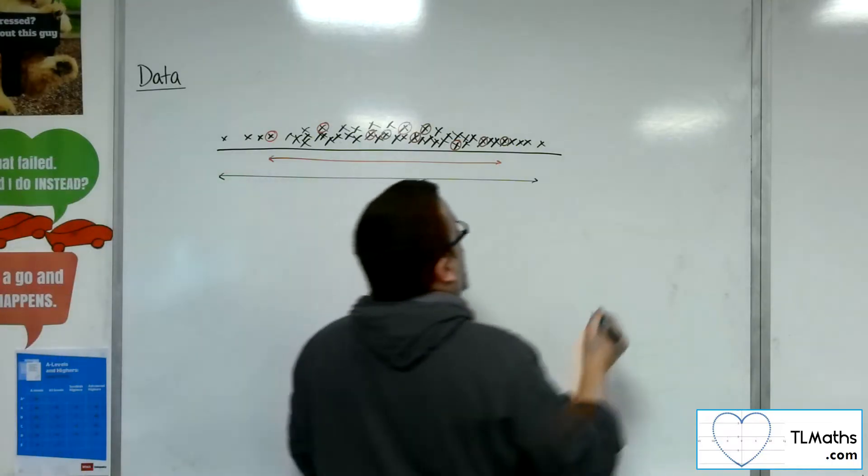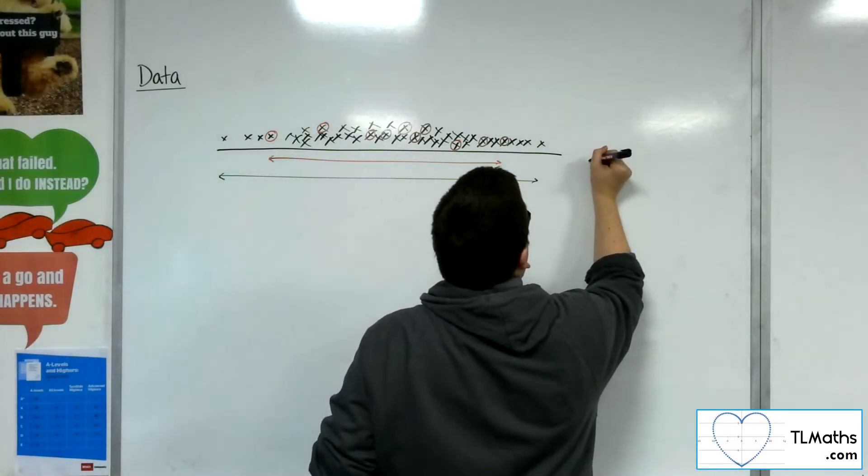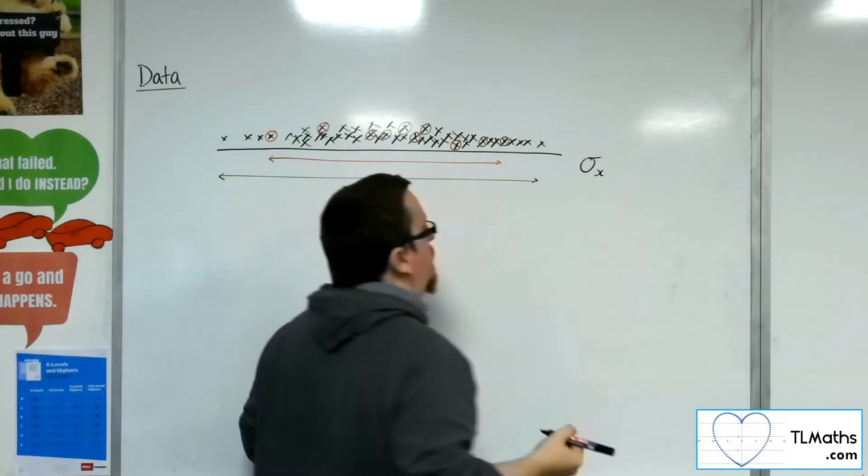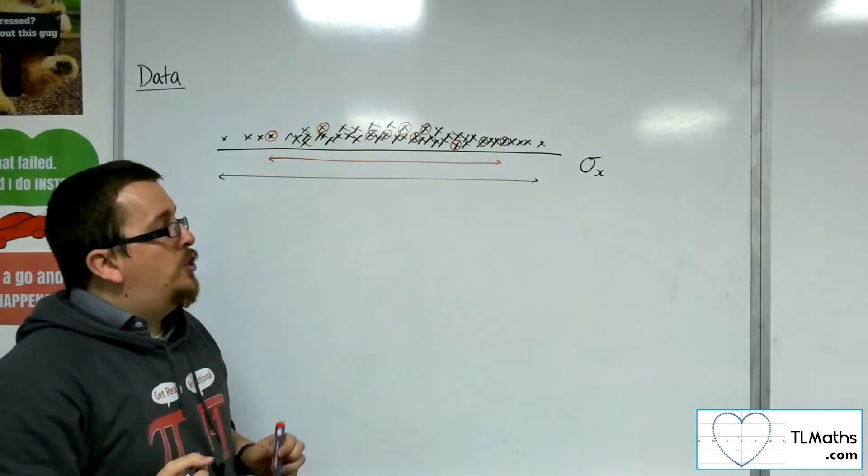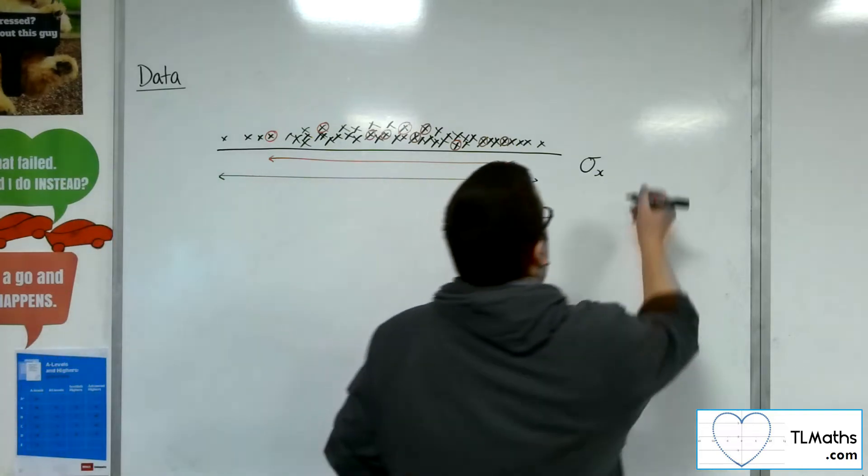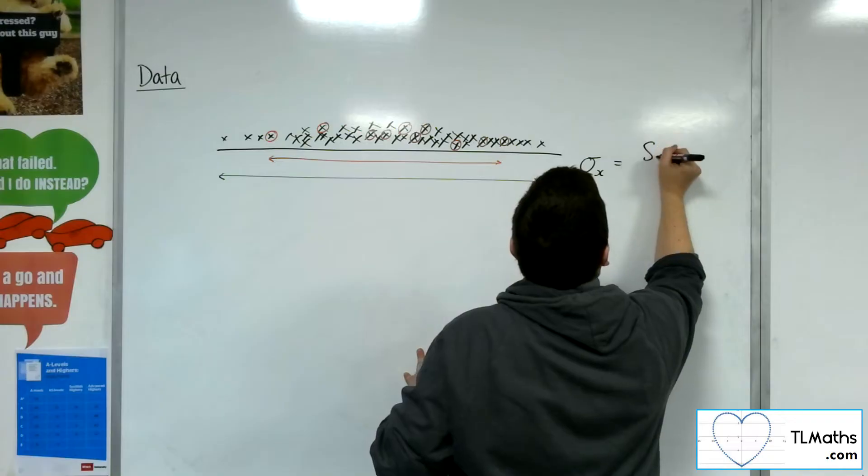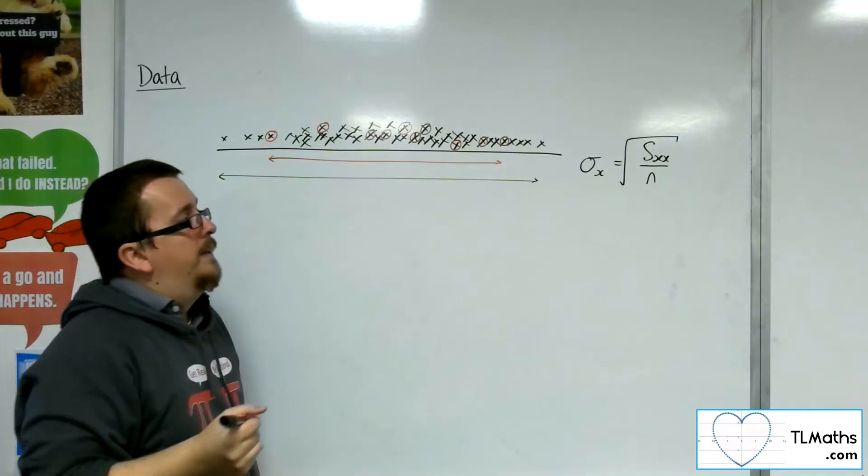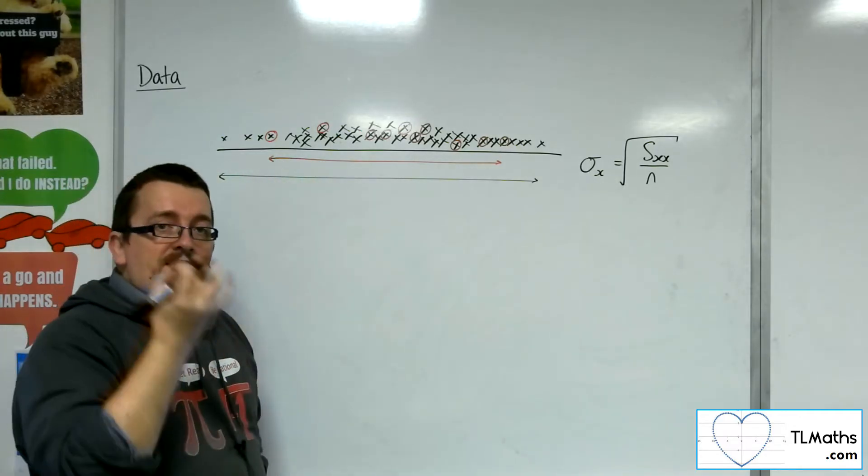So whereas the standard deviation of the sample, which you could work out as sigma x, which we know was the sum of the squares divided by n square rooted, that would be the standard deviation.